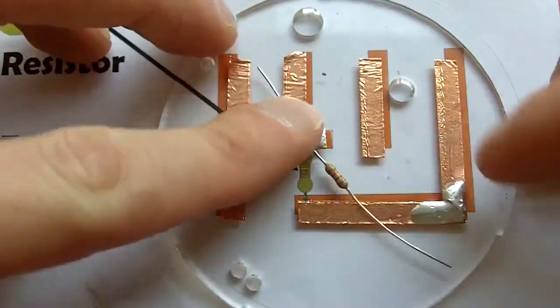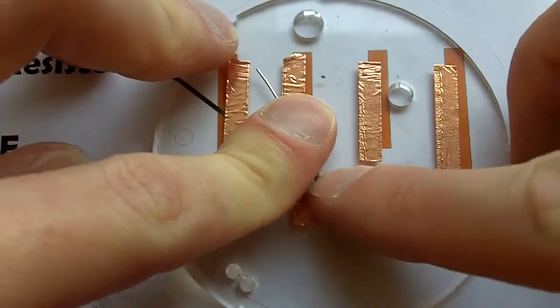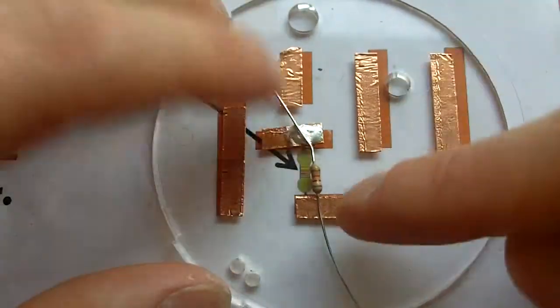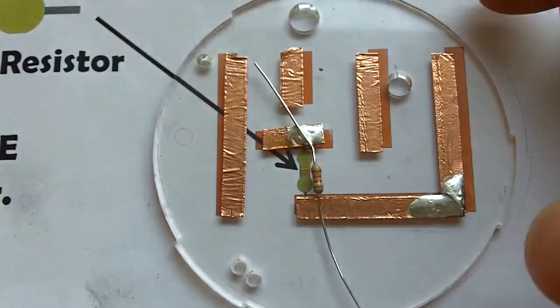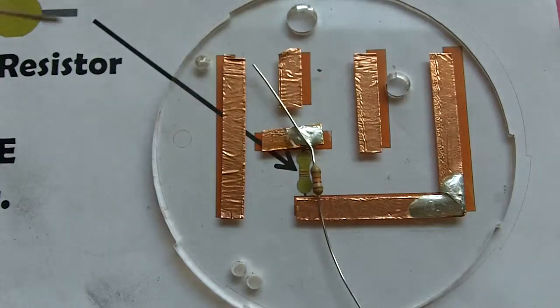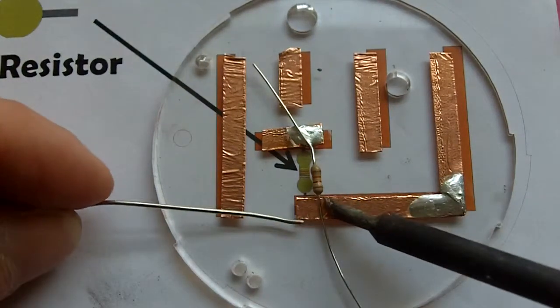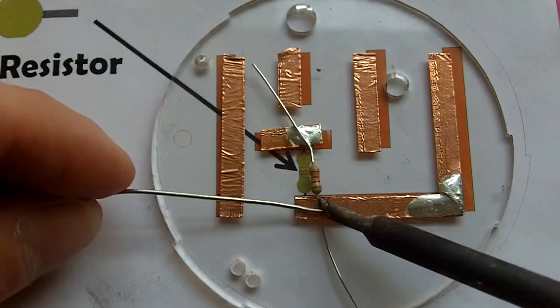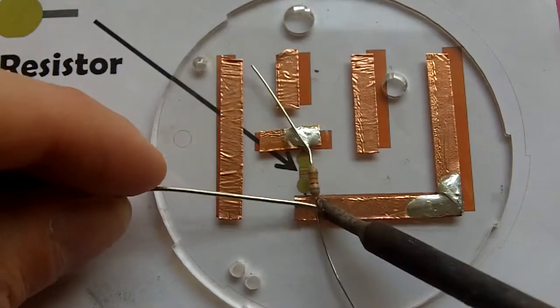And then what we can do, still keeping hold here, we can just bend the resistor around slightly so we can get it near enough where it's supposed to be. And we need to solder this second part, so soldering iron on its side, push in quite a bit of solder again.